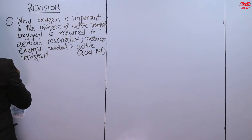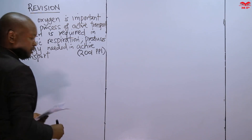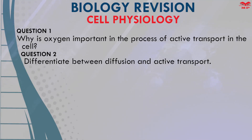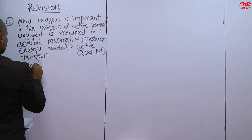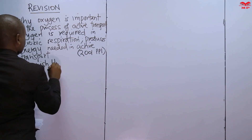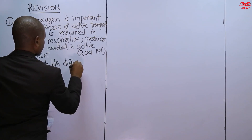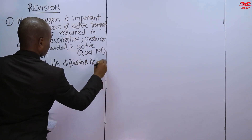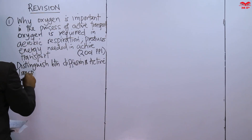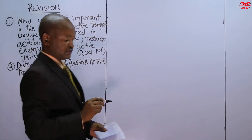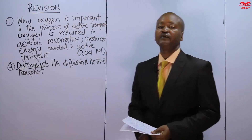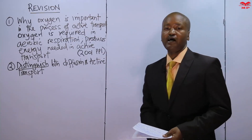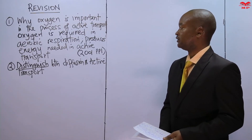Then we have question two, which asks the learner to differentiate between diffusion and active transport. When the examiner uses the word 'distinguish,' the learner should give the differences using the word 'while.' That is how to distinguish clearly between the two processes.